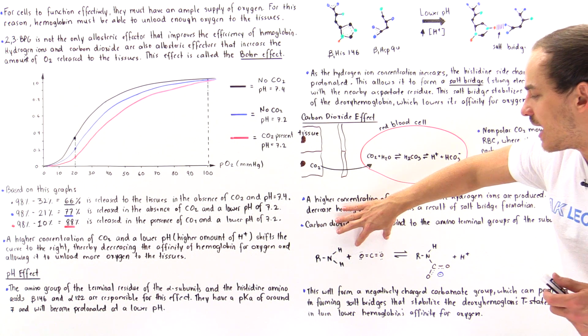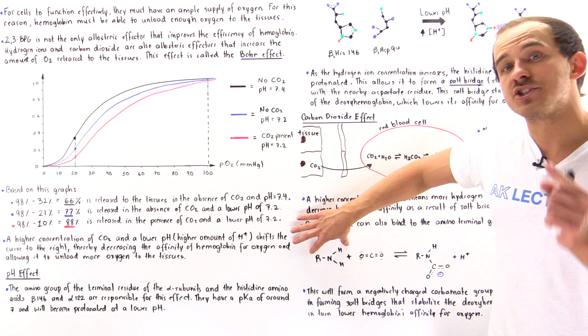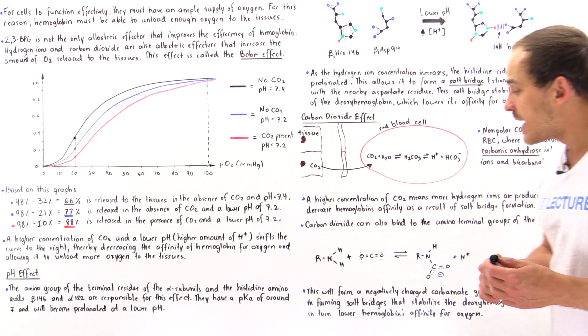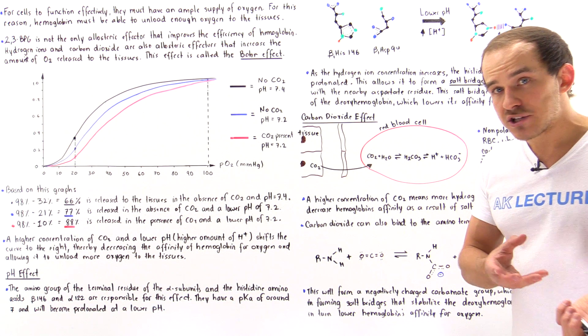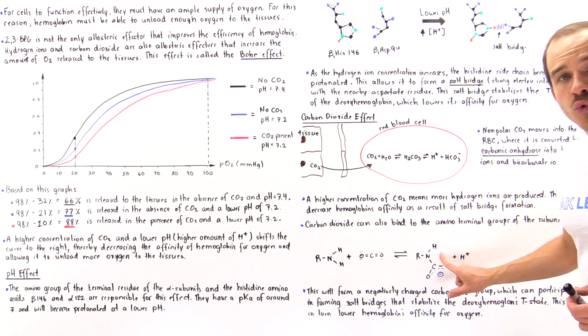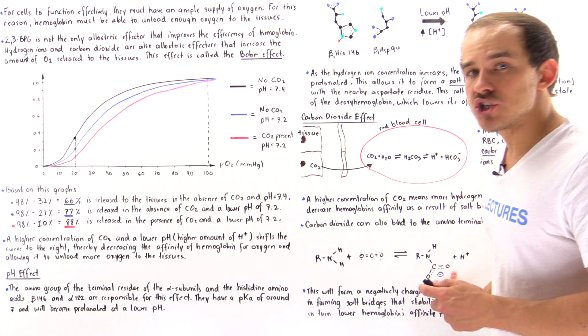So this is the carbon dioxide, the non-polar carbon dioxide, and this is the terminal residue, the amino terminal residue. So in the presence of a special enzyme, this is transformed into the following group known as the carbamate. So this carbamate contains a negative charge.